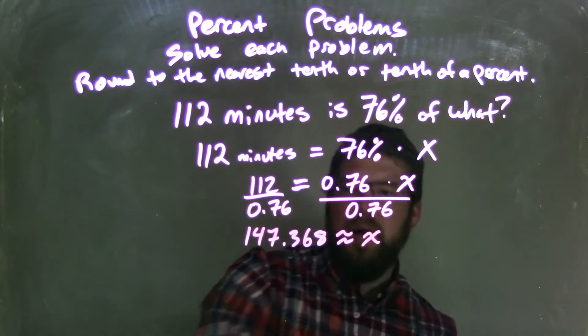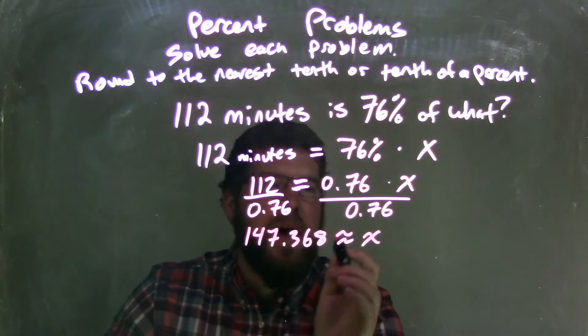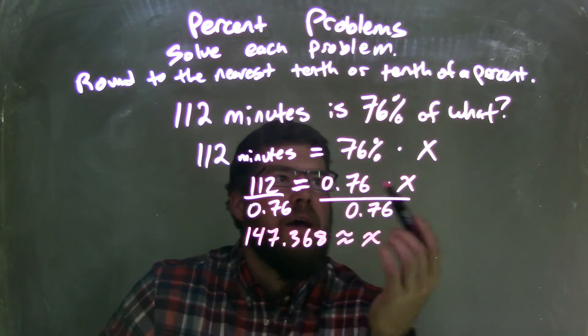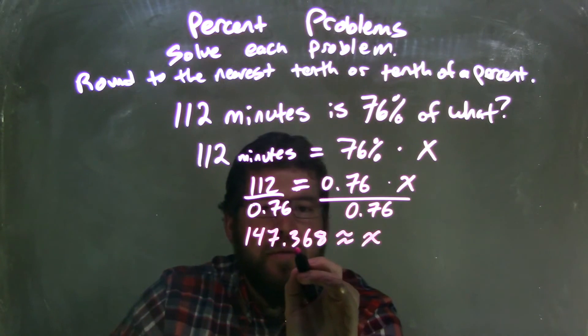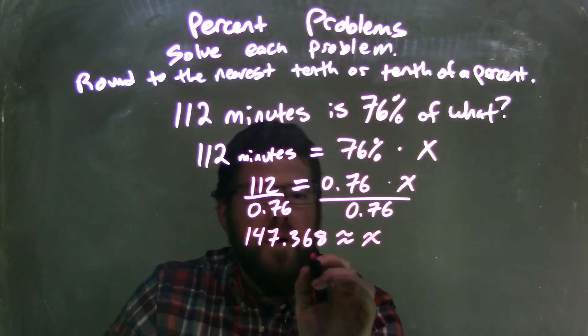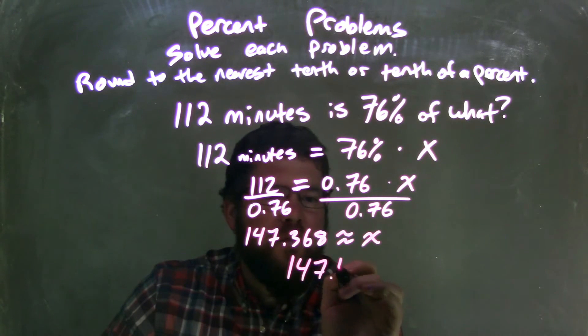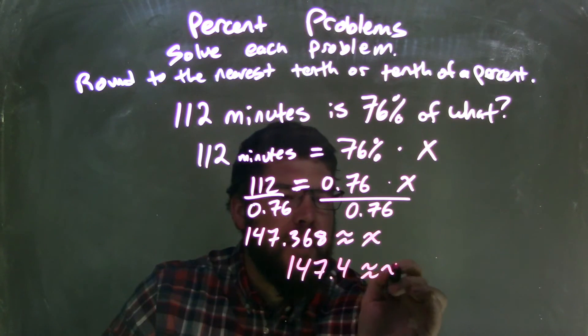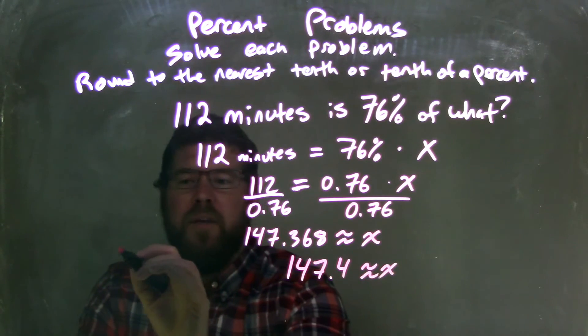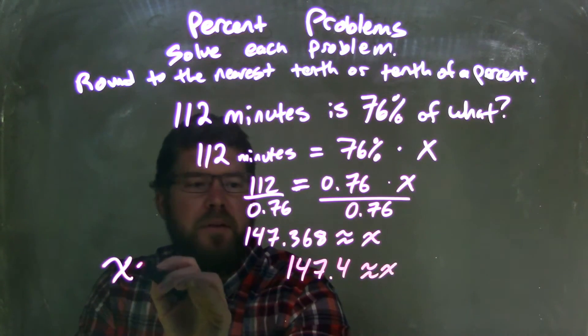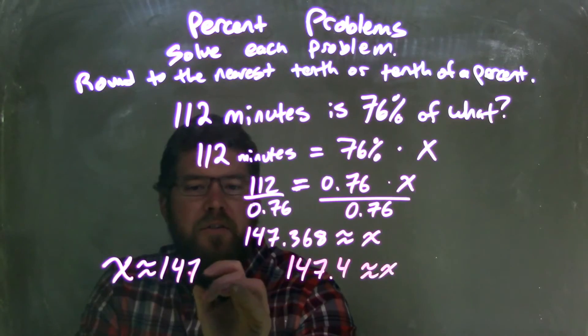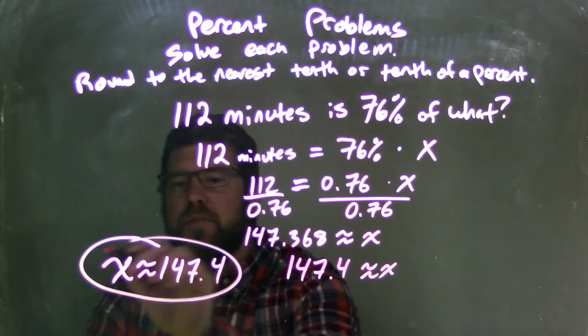Now we need to round this again to the nearest tenth, so I look at the 3. The 6 causes the 3 to round up to a 4. So we have 147.4 is approximately equal to x. To write it nice and neat, we'll have x come first, so x is approximately 147.4. That is my final answer.